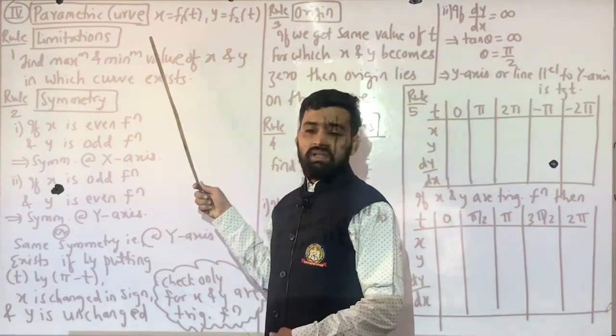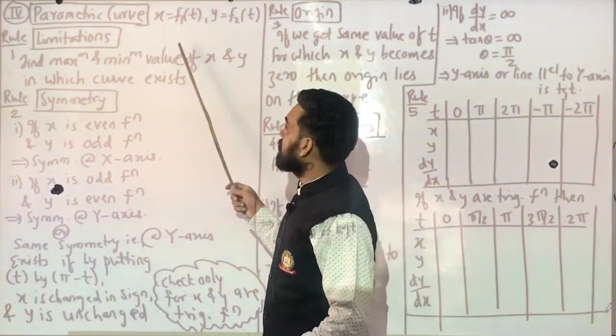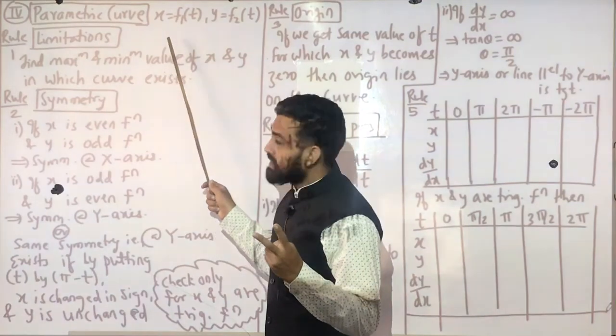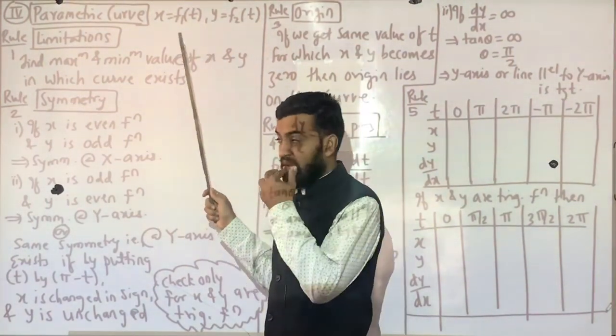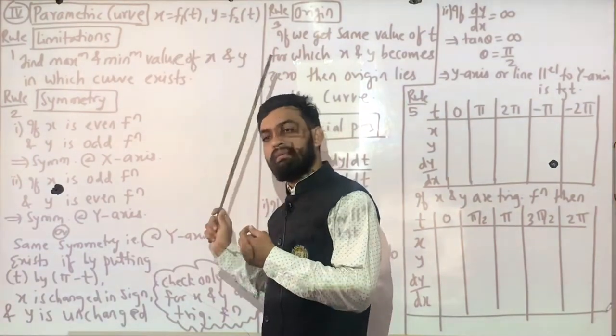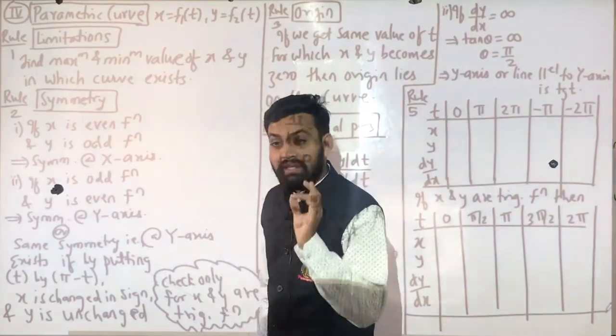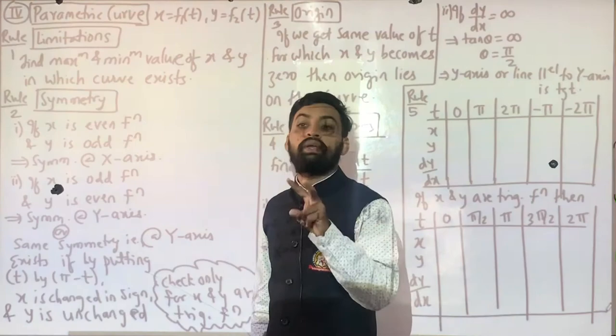Parametric is the last one. Parametric is the form of two equations: x equals f(t) and y equals f(t), or x equals p and y equals p. This is the same as two equations.